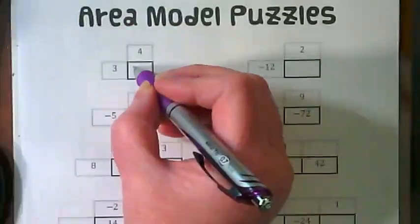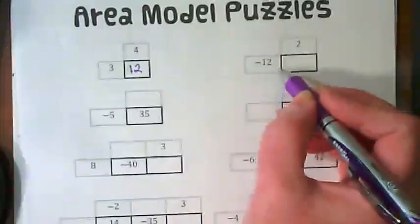4 times 3 would be what? 2 times negative 12 would be?